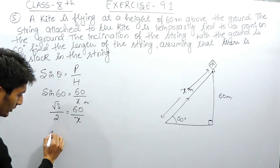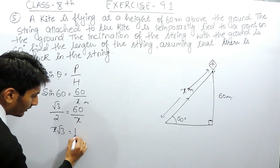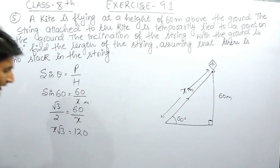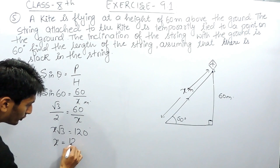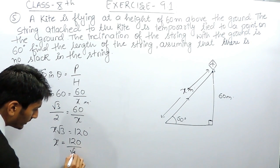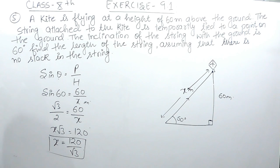If I cross multiply these values, this will give x root 3, and this will give 120. Because we have to find the value of x, I have to shift this root in the denominator. So the length of the string must be equal to 120 upon root 3 meters.